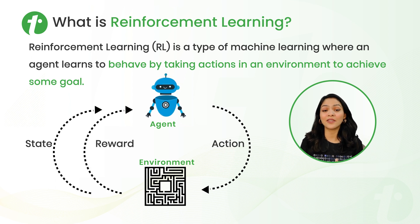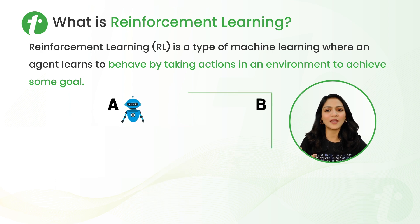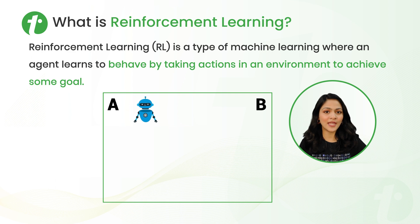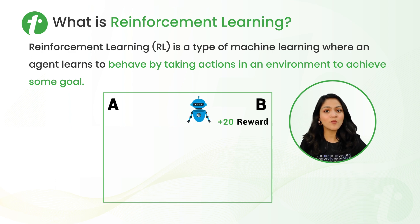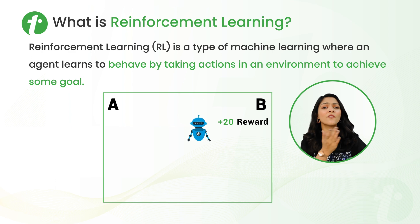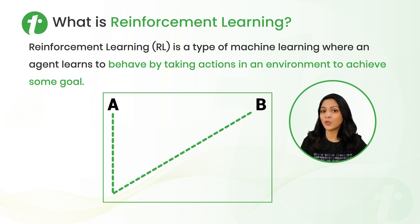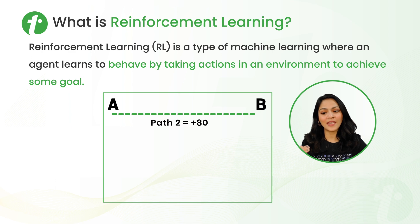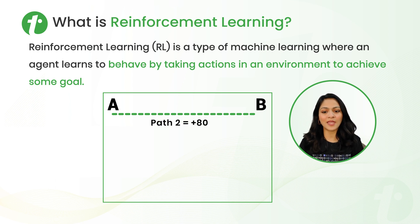We also discussed this example in the first video of our playlist. Let's understand it again. We have an agent and an environment — say the environment is a room with two points: point A and point B. The agent has to move from point A to point B. For every step closer to point B, the agent gets plus 20 points; for every step away, it gets minus 10 points. For path 1, the agent gets plus 60 points, and for path 2, it gets plus 80 points. So next time, the agent already knows that path 2 is more efficient and will follow those steps.